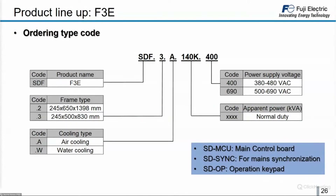On the F3 ordering type code, the important number shows the apparent power on the input in normal duty without overload. The ordering code for the power module, the main control board (SD-MCU), the synchronization board (SD-SYMC), and the optional operation keypad (SD-OP) are all separate references.